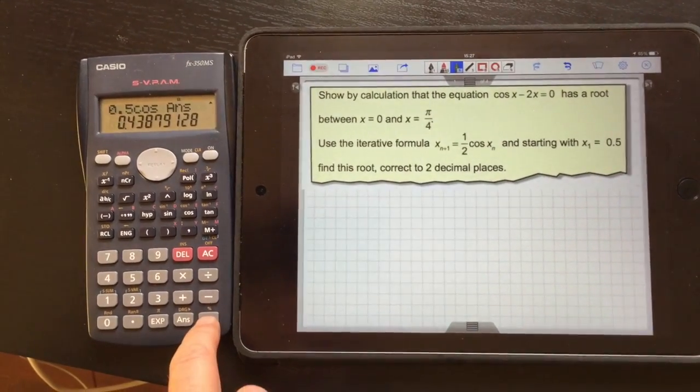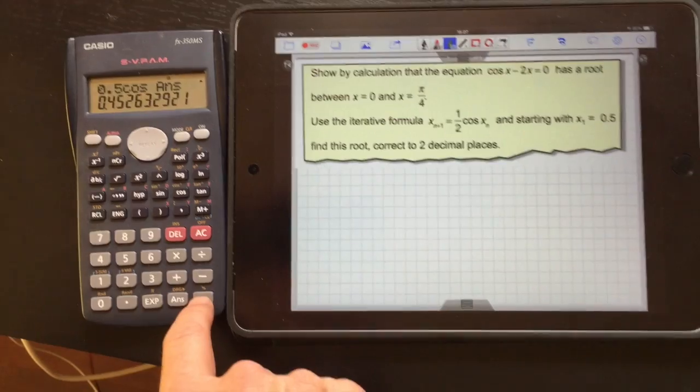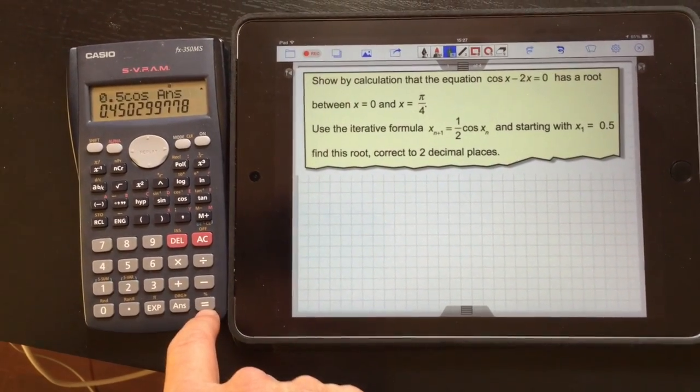All right, there's the first iteration. Press equals again, you get the next iteration. Press equal again, you get the next iteration. Next iteration.